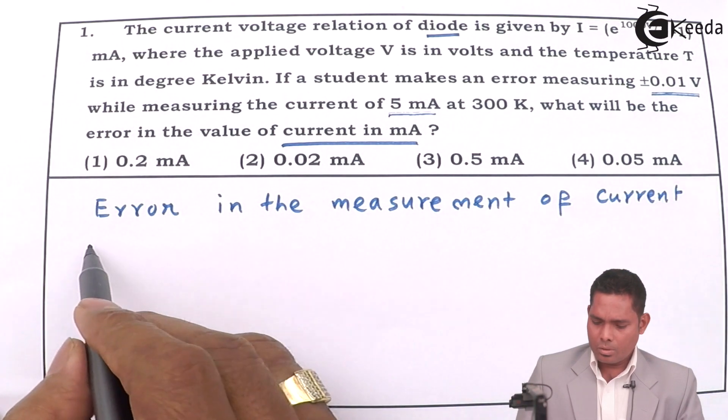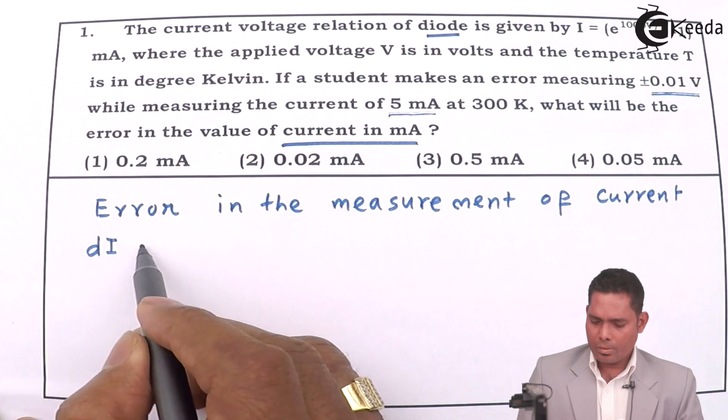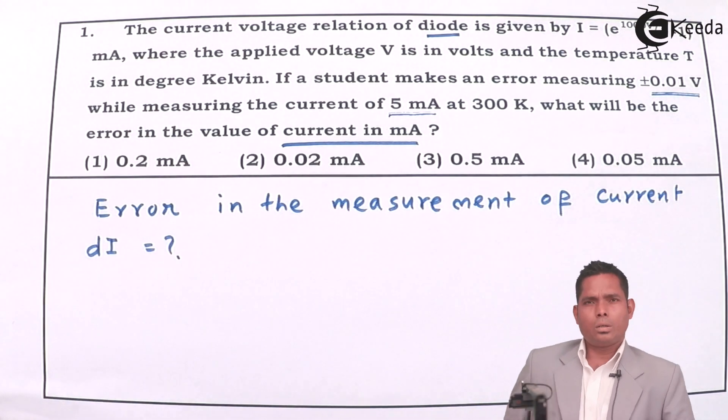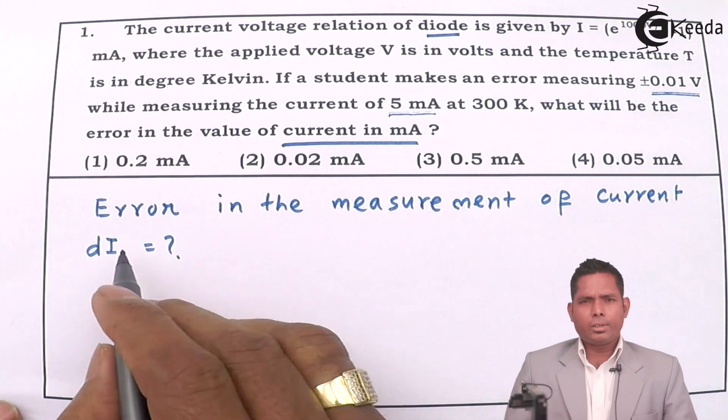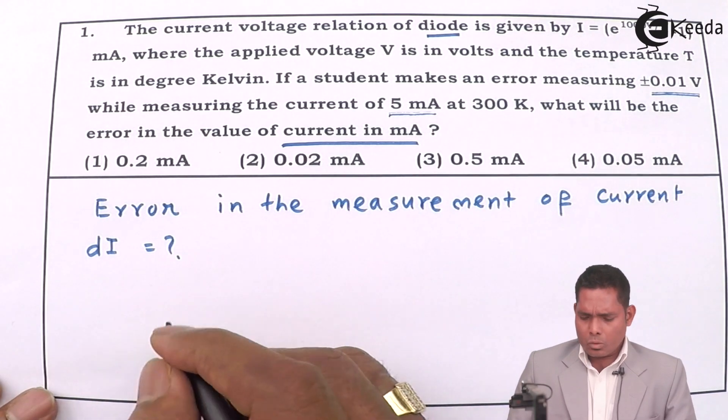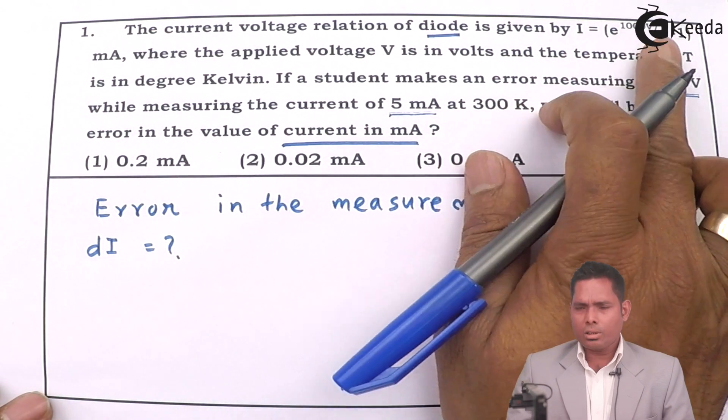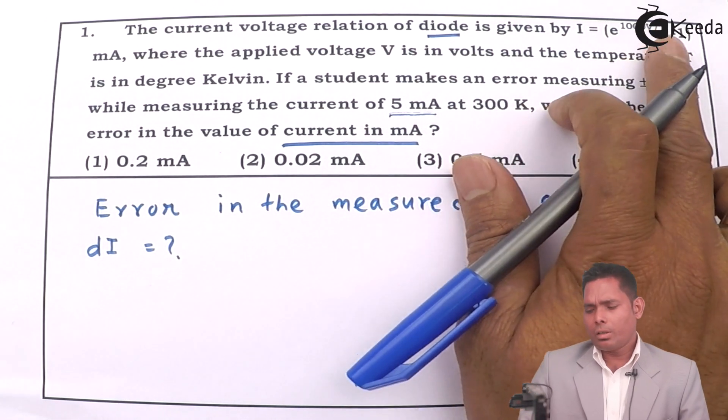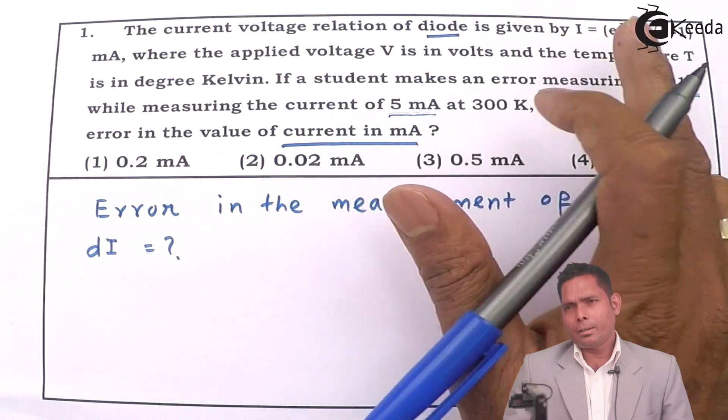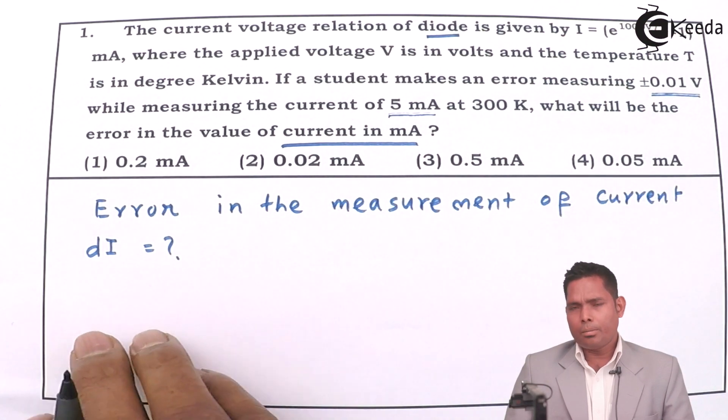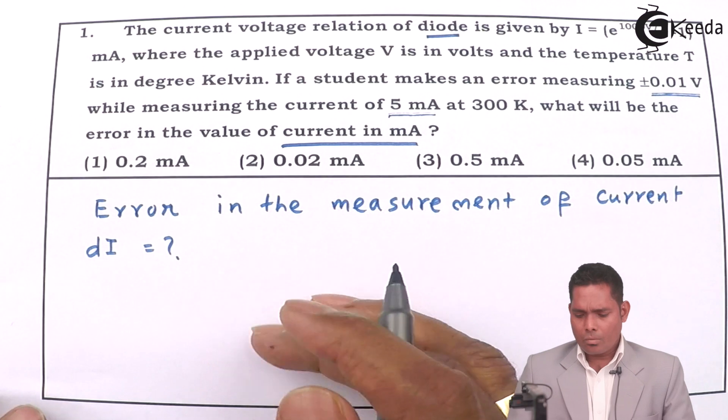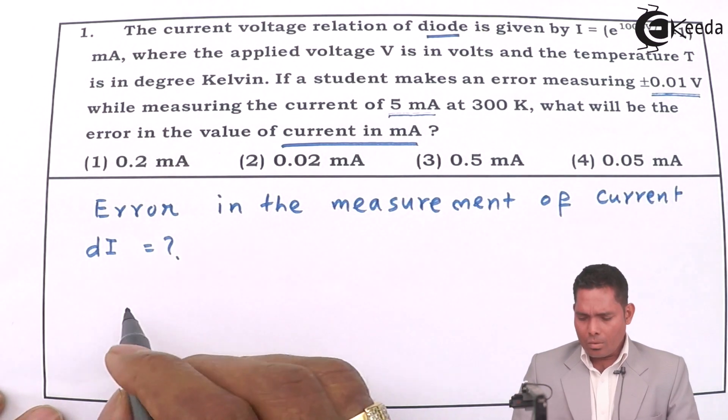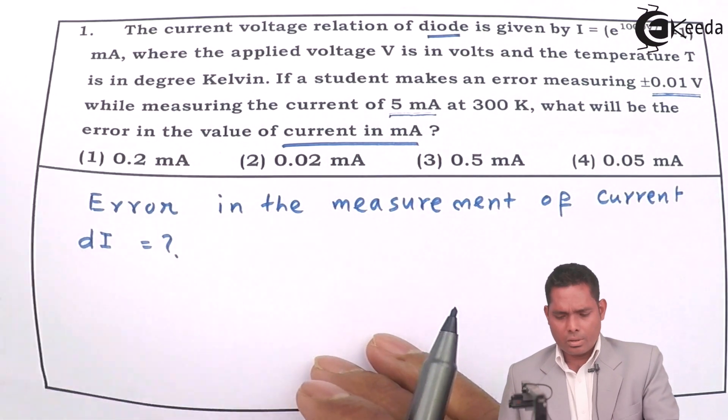That means dI - we have to find dI. If we use symbol properly then it is dI. And to get dI, I have this I relation with V. I will differentiate this with respect to V, I will get dI, and then make dI the subject and solve it.